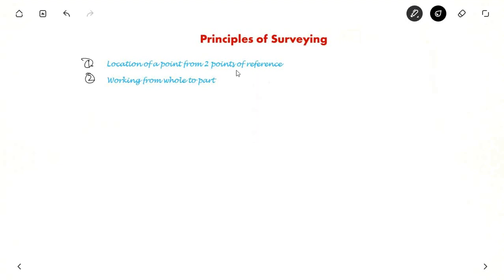One is location of a point from two points of reference. Whenever you want to locate a point A, you will locate it using two points of reference, X and Y. Because if you use two points, it will be very accurate. If you determine it is 5 meters from X and 4 meters from Y with so and so angles, then you can check it and accurately determine the position of A.